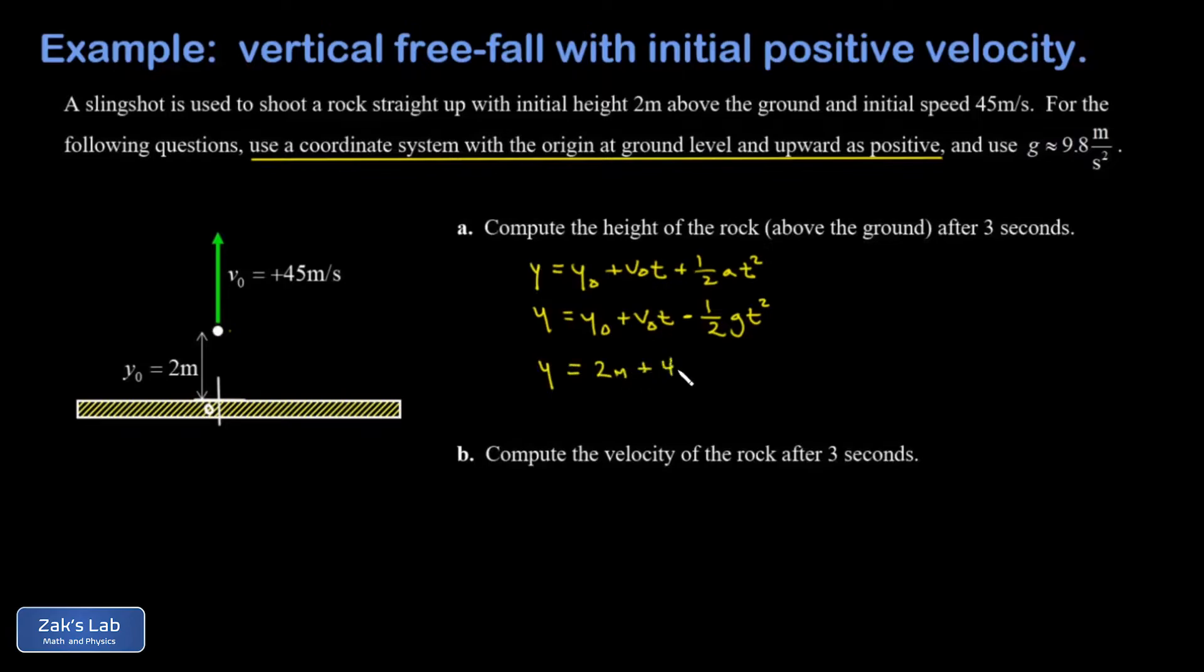What was the initial velocity? That was upward, it was positive 45 meters per second times the amount of time that's gone by. We're interested in the moment three seconds after the launch. And then minus one half, again we're using the approximation 9.8 for g meters per second squared times t squared, so three seconds all squared.